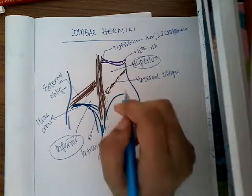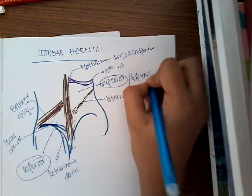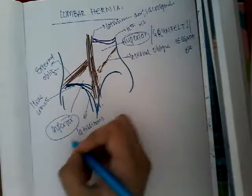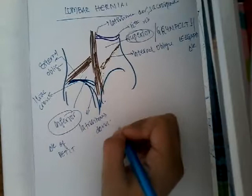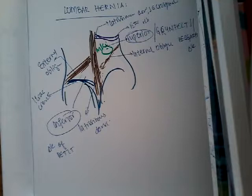There are other names for the superior and inferior lumbar triangles. The superior lumbar triangle is also called the Grynfeltt or Lesgaft's triangle, and the inferior lumbar triangle is called the triangle of Petit. The hernia is most commonly seen in the superior lumbar triangle. This lumbar hernia can occur primarily without any previous disease, or secondarily due to previous renal or other surgery.